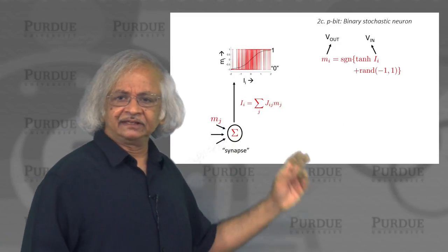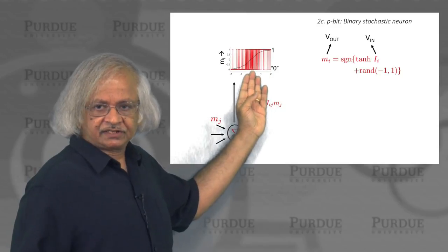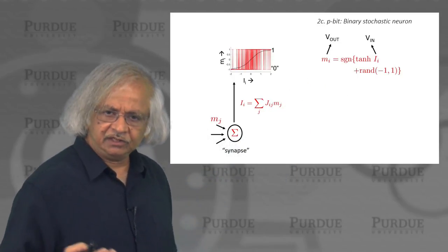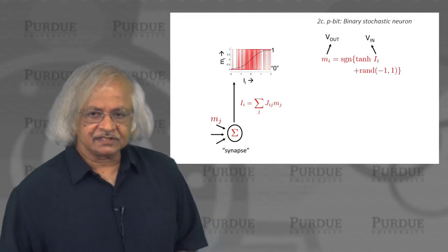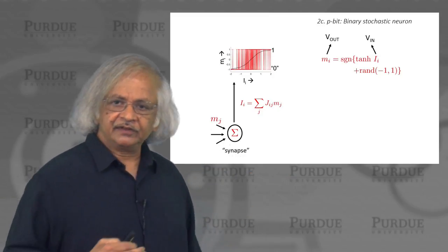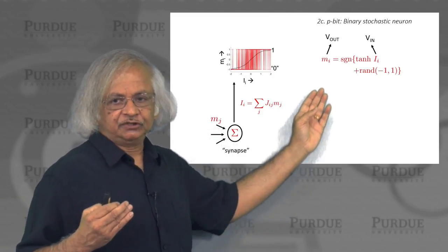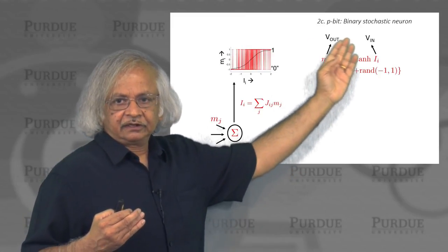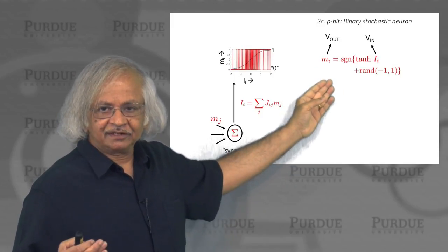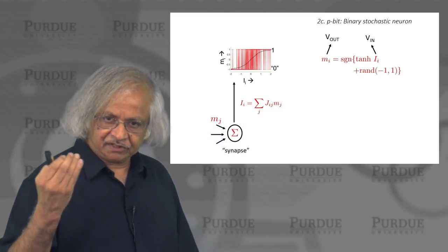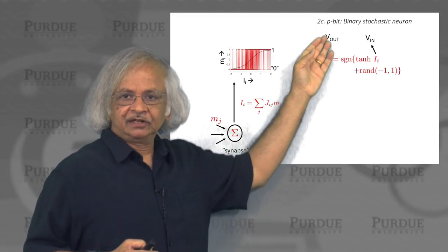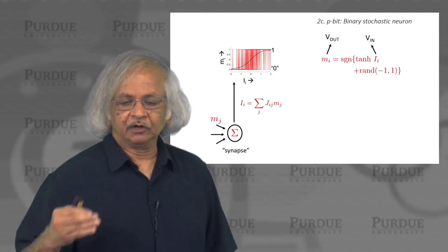Mathematically, this binary stochastic neuron could be described with an equation of this form. These two equations are widely used for discussing these stochastic neural networks in terms of software descriptions. What we are arguing is that these unstable magnets actually give you a natural way of physically implementing this relation. Of course, when you implement it in software, M and I are just numbers, dimensionless numbers. Whereas when you actually build hardware circuits out of it, they represent voltages in a circuit, stochastic voltages.